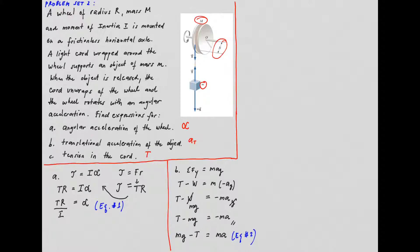Now, by looking at the equation, we can see that we can solve for letter B, which is the translational acceleration of the object. And that is mg minus the tension over m.